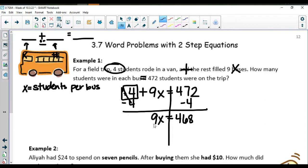Equals 468. My next step is going to be to divide by 9 because 9 times X. So to undo that I divide on both sides, getting X is equal to 52, and don't forget X represents students per bus. That means I have 52 students per bus.